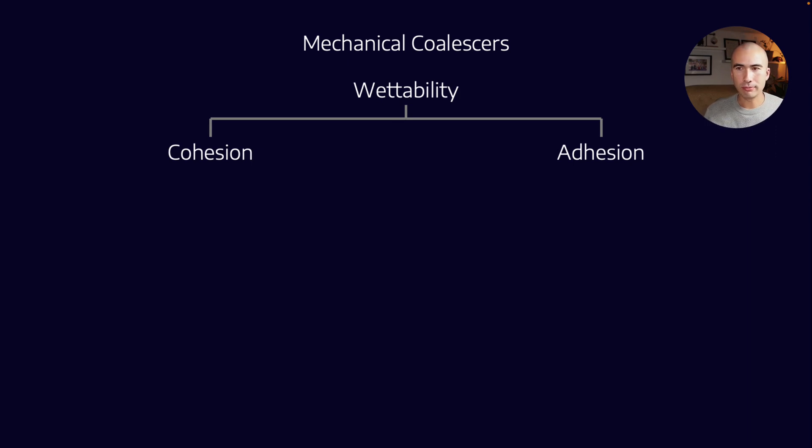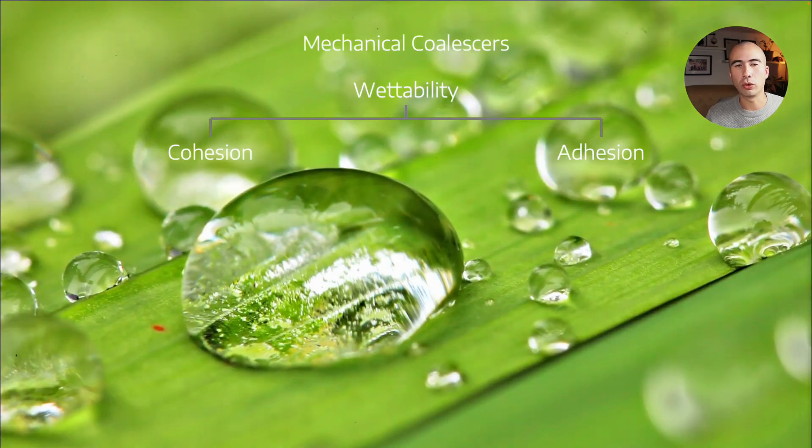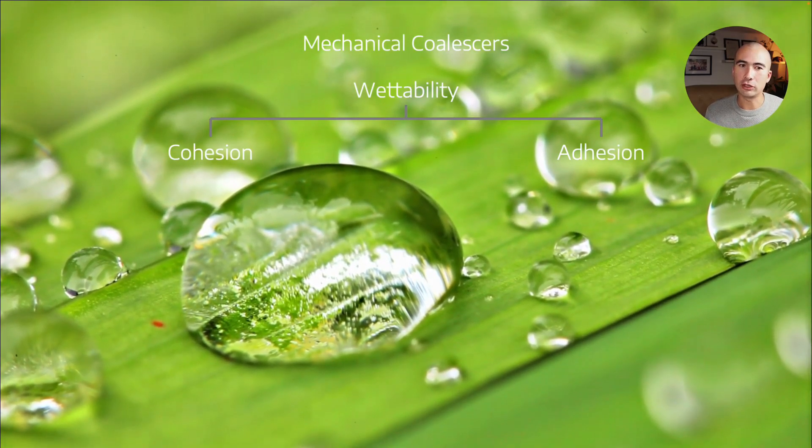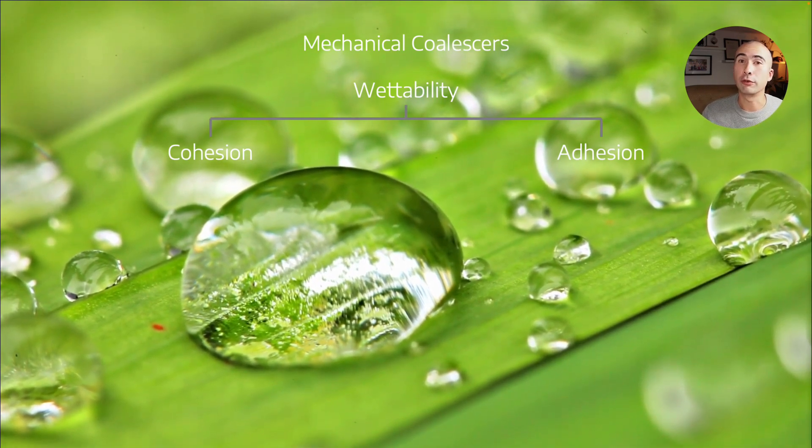Now you already understand wettability, you intuitively have seen it before. If you've ever seen water droplets on the surface of a leaf, that relates to the fact that the surface of the leaf is what we call hydrophobic.